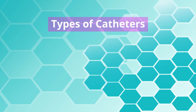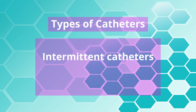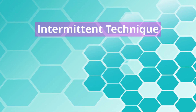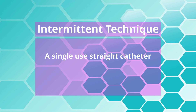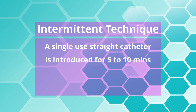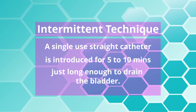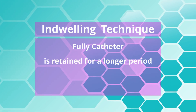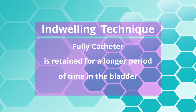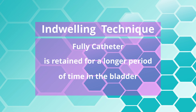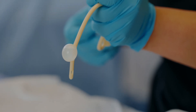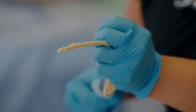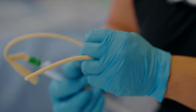There are different types of catheters. Catheters can be intermittent or indwelling. With the intermittent technique, a single-use straight catheter is introduced for 5 to 10 minutes, just long enough to drain the bladder. An indwelling or Foley catheter is retained for a longer period of time in the bladder by means of a small balloon that anchors it against the bladder neck. The catheter remains in place until the client is able to void completely and voluntarily.